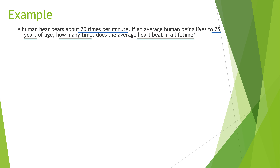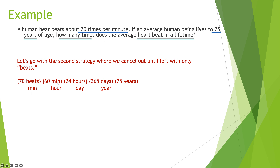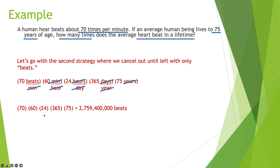Using Strategy two: we cancel out until we're left with only beats. Start with 70 beats per minute, then multiply by minutes per hour, then hours per day, then days per year, then 75 years. Cancel out minutes, hours, days, and years — the only thing left is beats. Multiply 70 × 60 × 24 × 365 × 75, and you get approximately 2,759,400,000 beats — about 2 billion 759 million heartbeats in a lifetime.